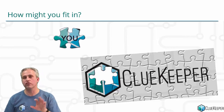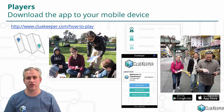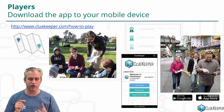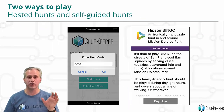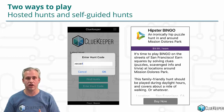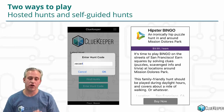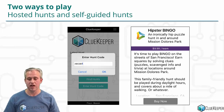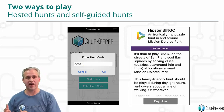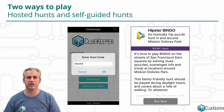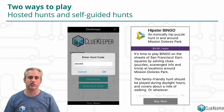That brings us to the last question: how might you fit in? One way is as a player — we need players to play these hunts, and being a player is really easy. You download the Android or iOS app. There are two ways to play: you can play in someone else's hosted hunt, in which case they'll give you a six-digit code to download their hunt and play in the event. Or we have self-guided hunts — if you want to play this Saturday, you can come into the app and purchase one, very on-demand.